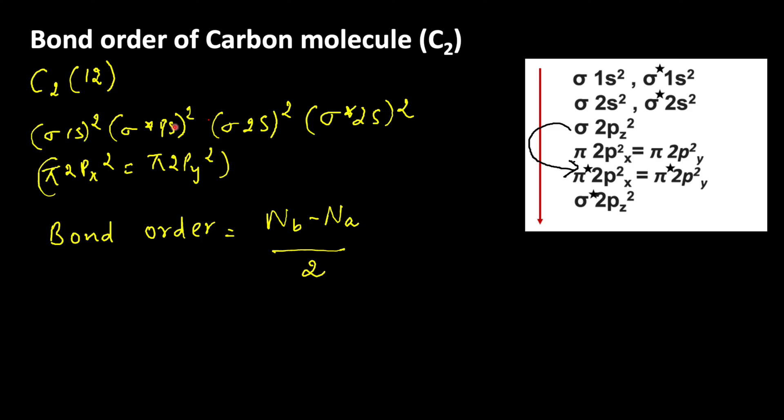For anti-bonding molecular orbitals, sigma star 1s 2, so 2, sigma star 2s 2, so 2 plus 2 equals 4.